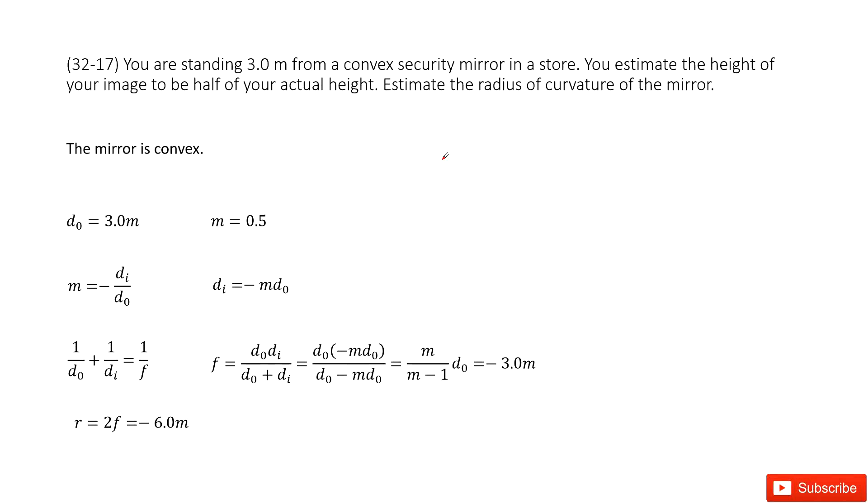You are standing 3.0 m from a convex circular mirror in a store. The keyword is convex circular mirror. The mirror is convex. The object distance is 3.0 m. You estimate the height of your image to be half of your actual height.